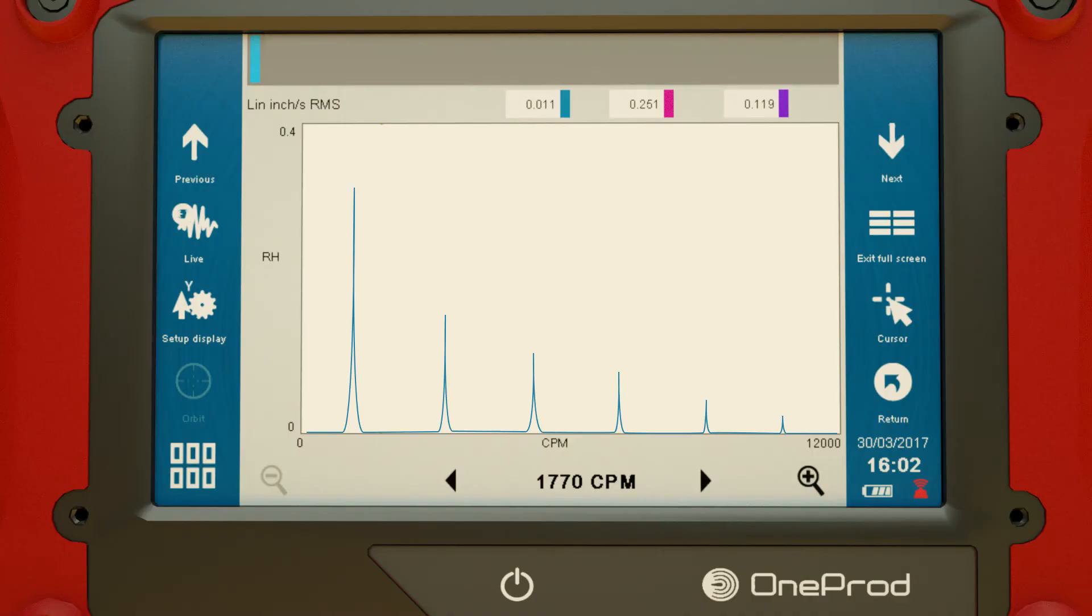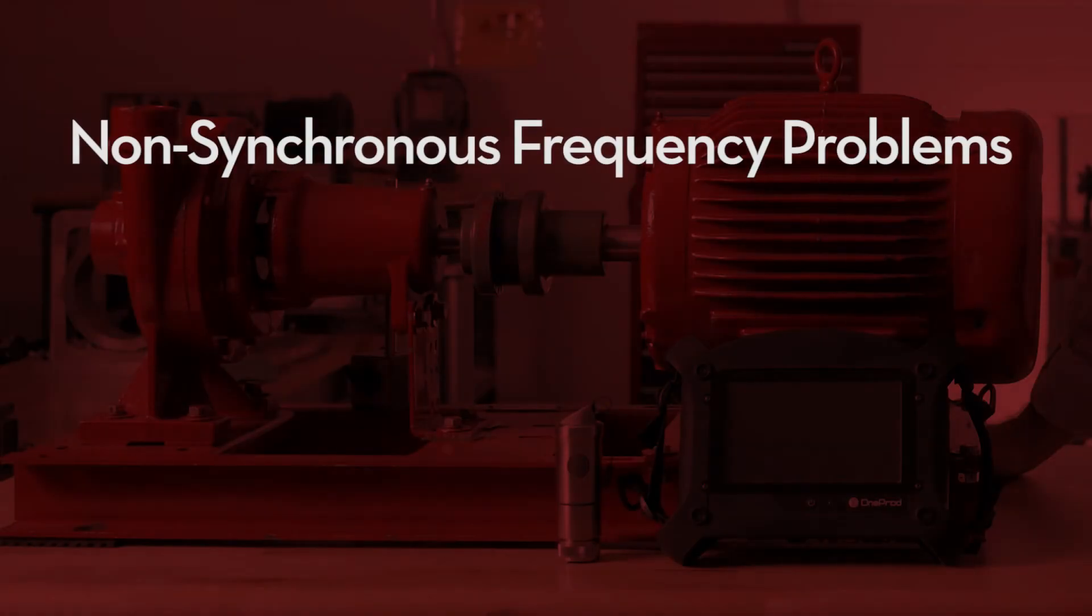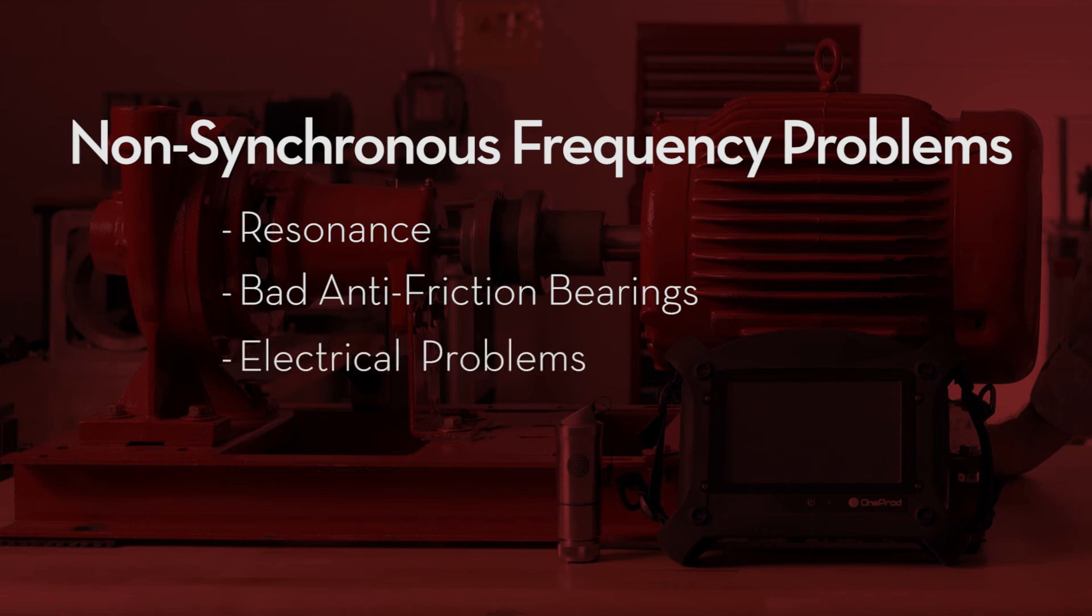Other problems will generate amplitude at frequencies that are not harmonically related to run speed. Those peaks are called non-synchronous peaks. Some examples of problems that might cause non-synchronous frequencies are resonance, bad bearings, electrical problems, and cavitation.